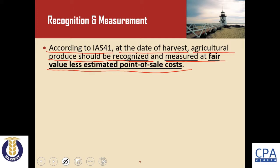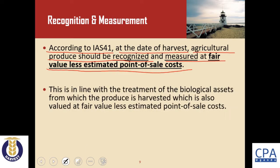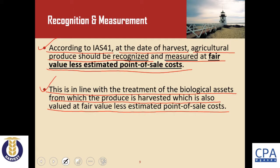Before recognizing the fair value, we deduct estimated point-of-sale costs. This treatment is in line with the treatment of the biological assets from which the produce is harvested, which are also valued at fair value less estimated point-of-sale costs. Agricultural produce is derived from biological assets, so for matching purposes the treatment is ideally the same.